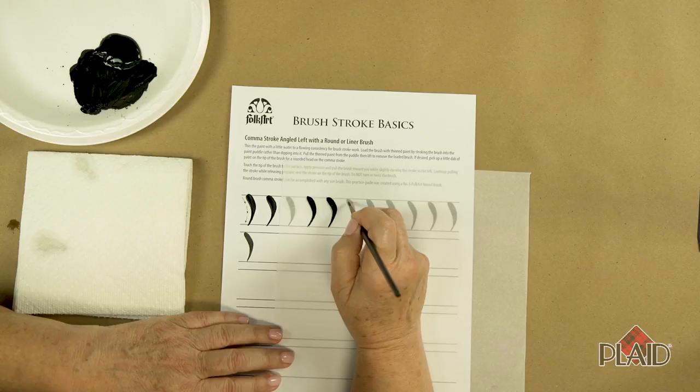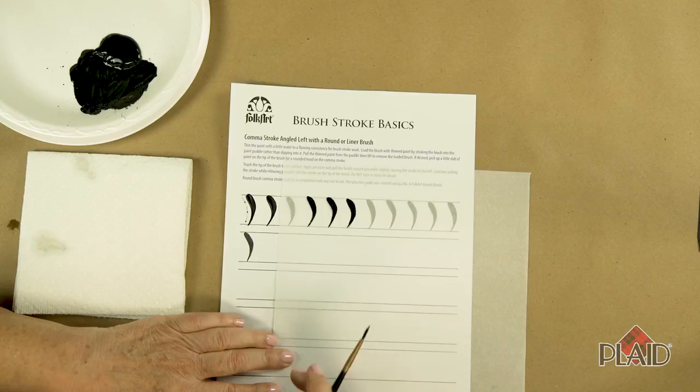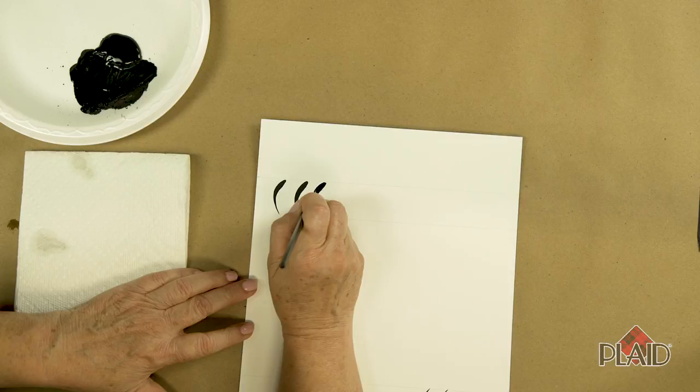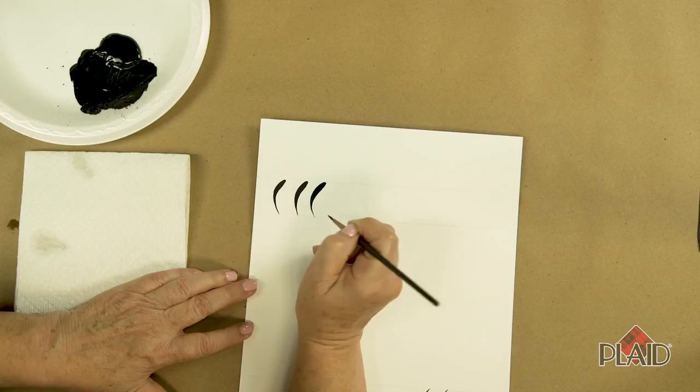Now let's try a few comma strokes to the right. The comma stroke to the right is done exactly like the left. We're going to start at the top, apply pressure on that brush, begin pulling towards you but curving slightly to the right. The whole time I'm lifting and dragging so that I end up at the point.